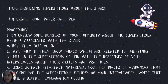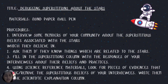Learning Task Number 2 — Title: Debunking Superstitions About the Stars. Materials: bond paper and ballpen. Procedure: interview some members of your family or community about superstitious beliefs associated with the stars. Fill in the superstitions column with the responses of your interviewees about their beliefs and practices. Using science references, look for evidence that debunks the superstitious beliefs of your interviewees and write them in the scientific explanation column.